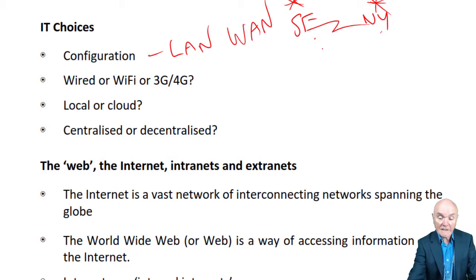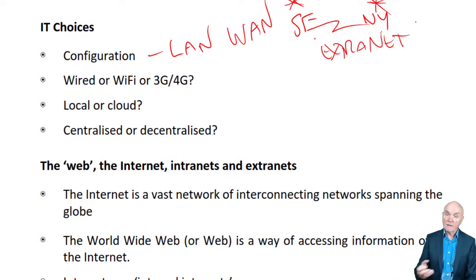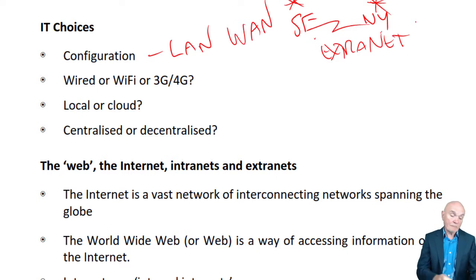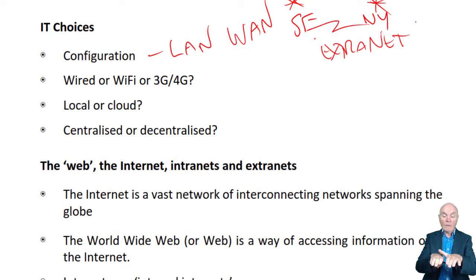Then you can have what's called an extranet. This is where your IT system is given access to somebody else's IT system — you go outside your network to somebody else's. A great use of this, very early on in automation, was with supermarkets: if inventory got down to a particular level, supermarkets would automatically send an order to a supplier.